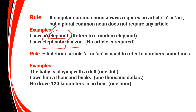Indefinite articles are also used to refer to numbers. 'The baby is playing with a doll' — meaning one doll. 'I owe him a thousand bucks' — that means one thousand bucks. 'He drove 120 kilometers in an hour' — meaning one hour.